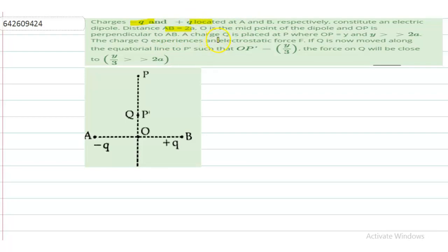OP is y, where y is much much greater than twice of a. So Q experiences electrostatic force F. Now Q is moved along the equatorial line to P' such that OP' is y by 3. The force on Q will be closest to what?